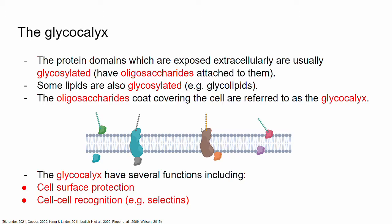There are also some lipids which are glycosylated — I mentioned before glycolipids. These are lipids which are attached to sugars, including glycosphingolipids or glyceroglycolipids. The oligosaccharides that can be found exposed to the outside of the cell or covering the cell are collectively known as the glycocalyx.